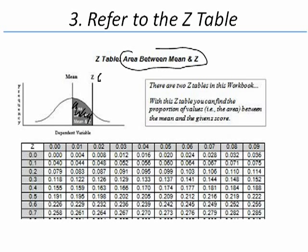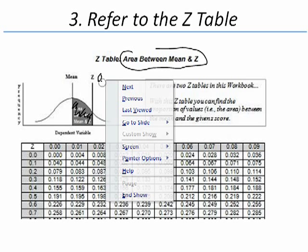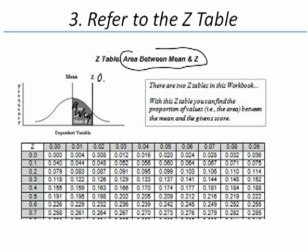Our z-score is 0.17. Notice that along the left are the z-scores to the tenths place. It doesn't go to the hundredths place. And along the right, it goes to the hundredths place. Let's zoom in.